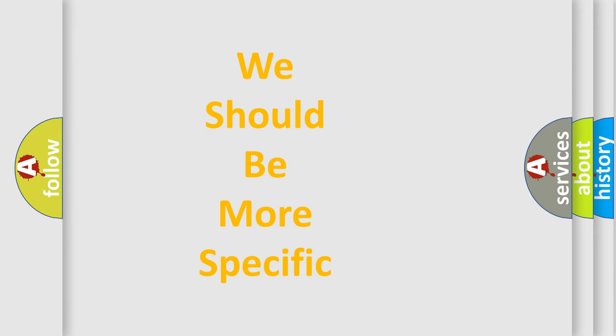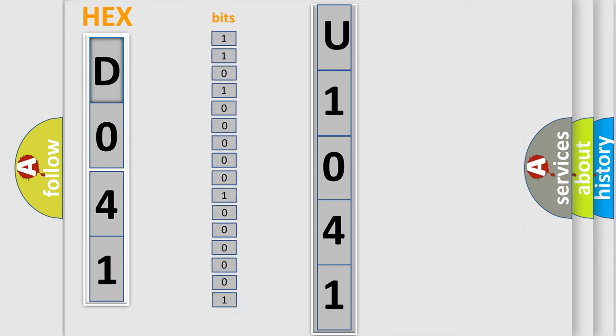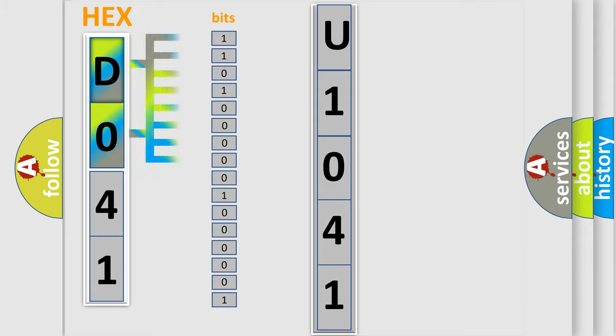The following demonstration will help you look into the world of software for car control units. The error code is split into two bytes consisting of 16 bits. One bit is the basic unit that each computer works with. The bit has two logical states: zero, low level, and one, high level.